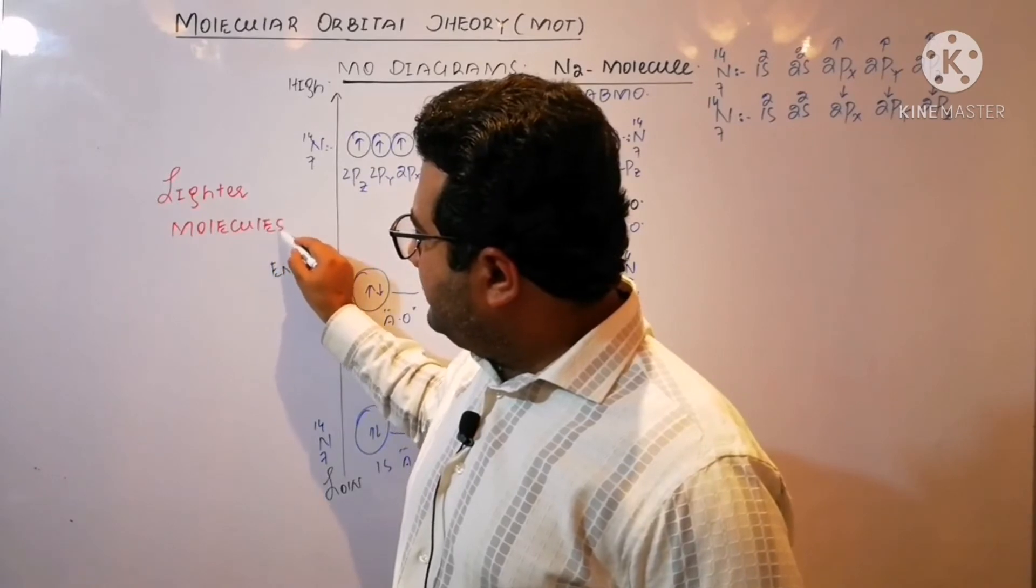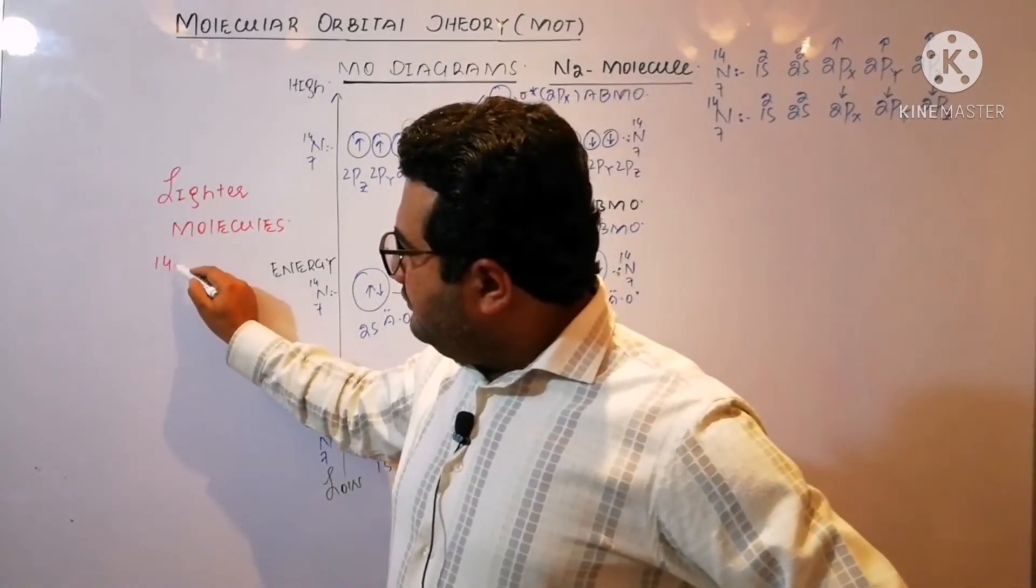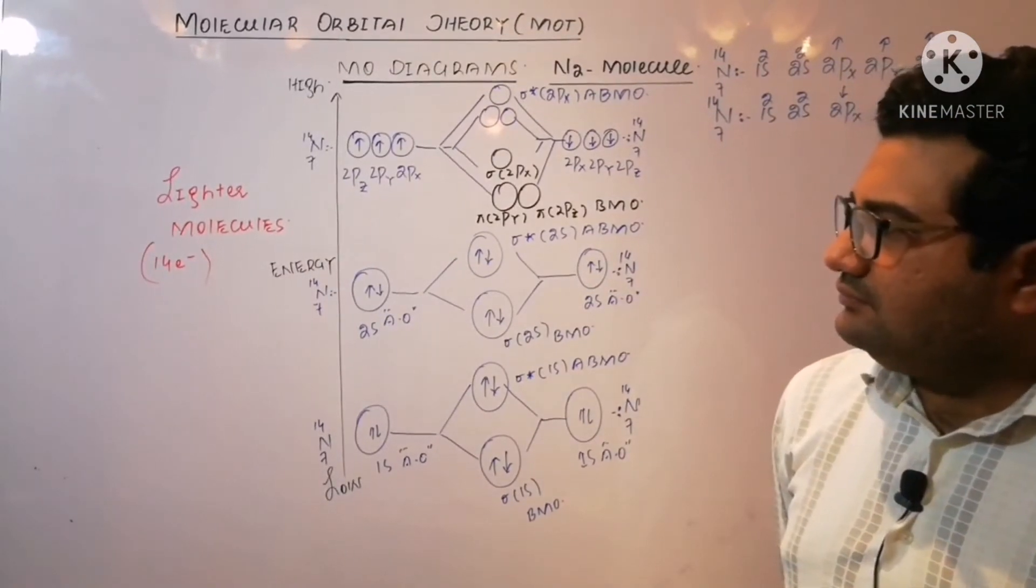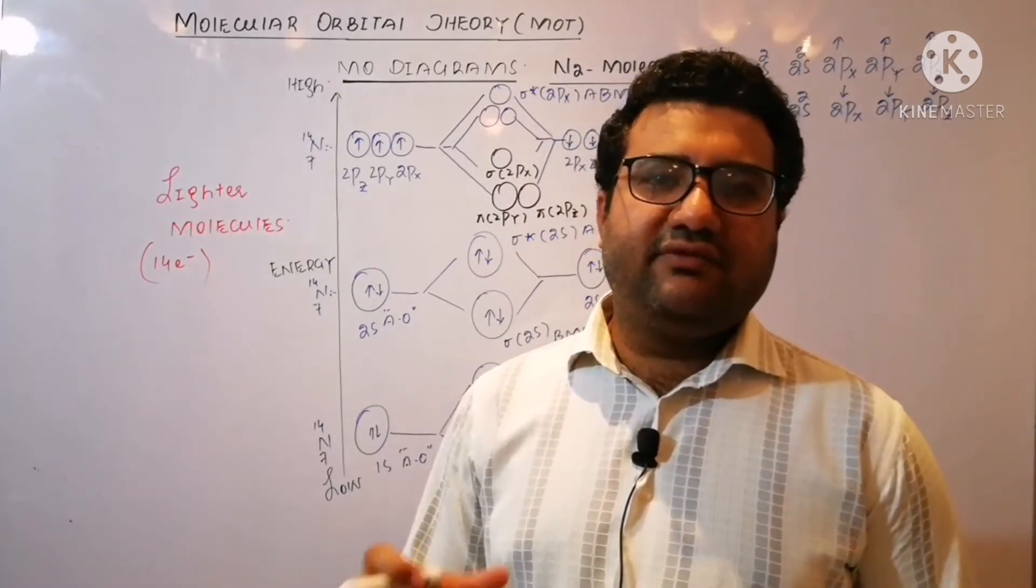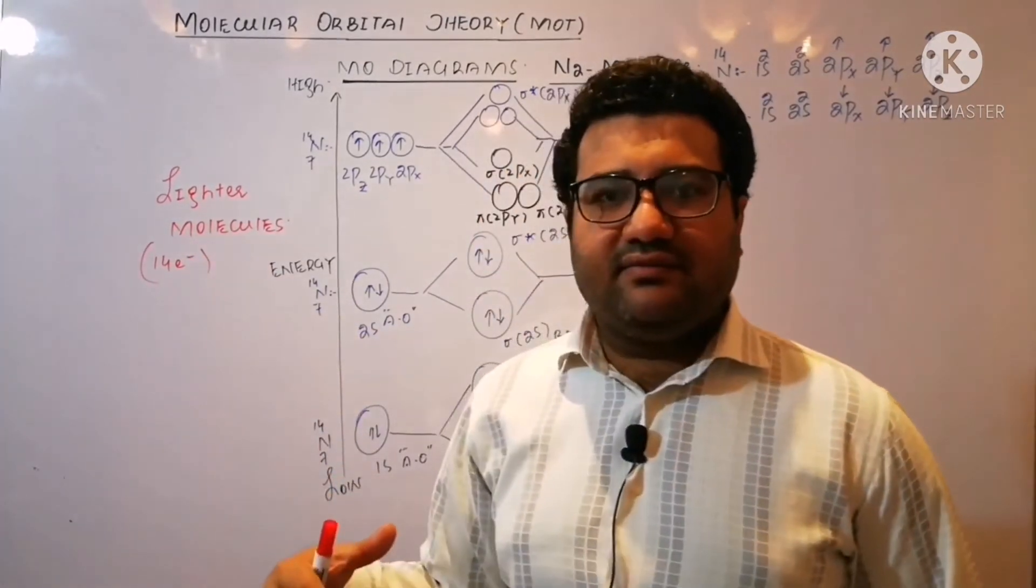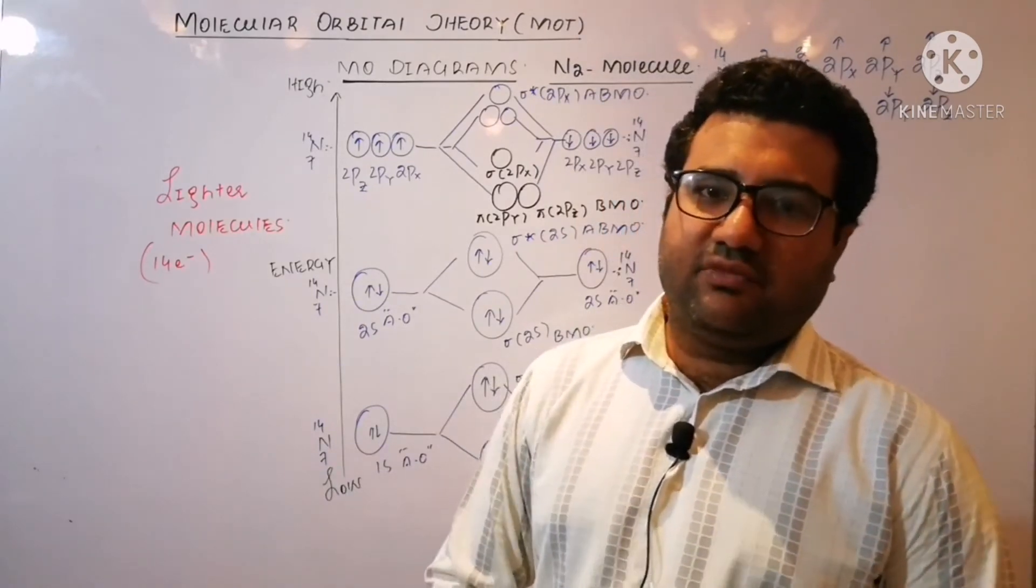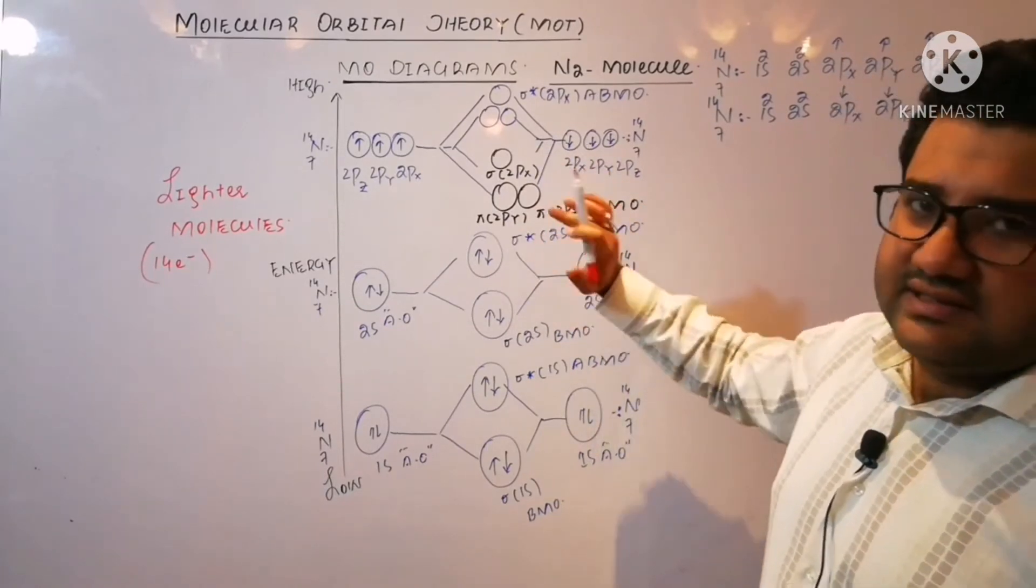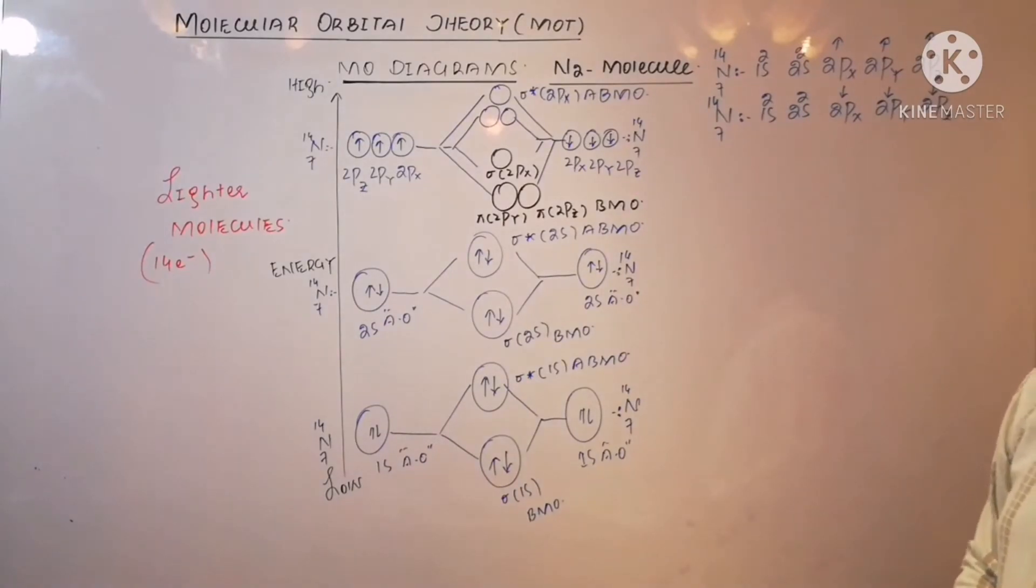We will have to vary this order in the lighter molecules. Which molecules are the lighter molecules? Having up to 14 electrons, meaning from H₂ to N₂, all the molecules will be lighter molecules. But those molecules that have more than 14 electrons in them—meaning oxygen and so on—they will be considered as the heavier molecules. And in the heavier molecules, you will not change this sequence.